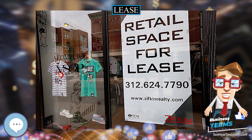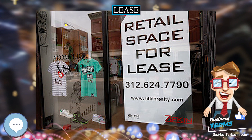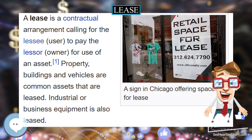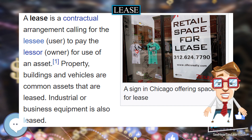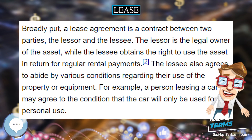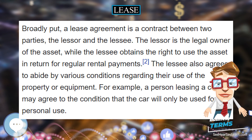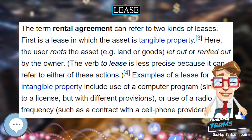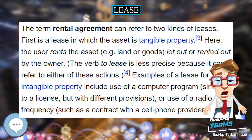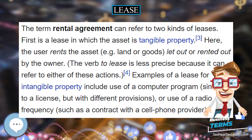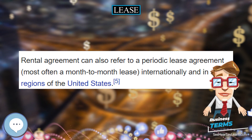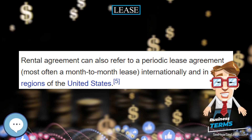Lease. A lease is a contractual arrangement calling for the lessee, or user, to pay the lessor, or owner, for use of an asset. Property, buildings and vehicles are common assets that are leased. Industrial or business equipment is also leased. Broadly put, a lease agreement is a contract between two parties, the lessor and the lessee.